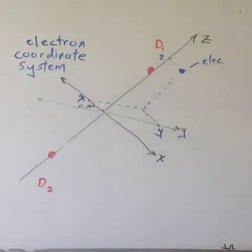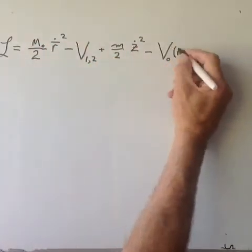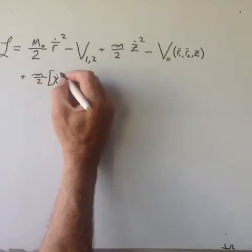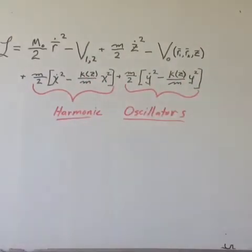With the aforementioned approximations and the just described coordinate system, we can now rewrite the Lagrangian as shown. Note that the electron in the x and y dimensions has the form of a harmonic oscillator.